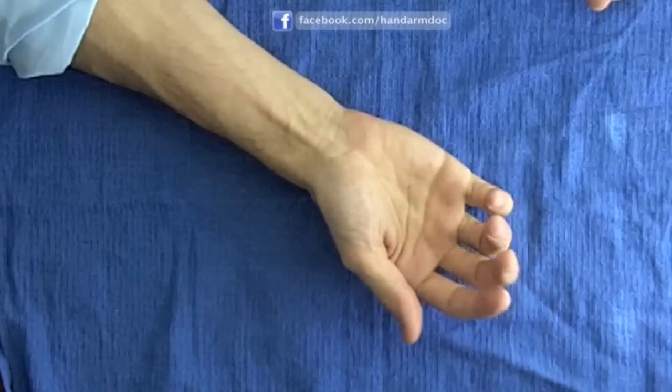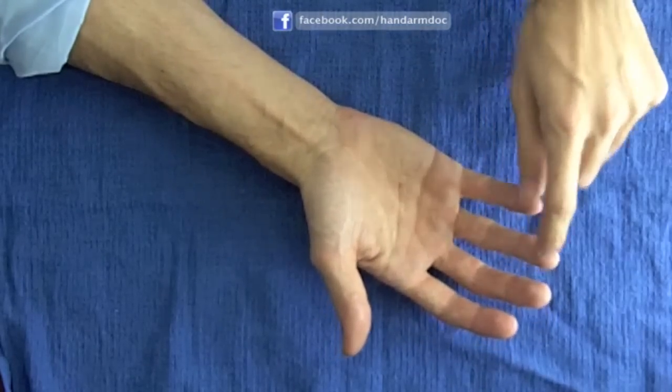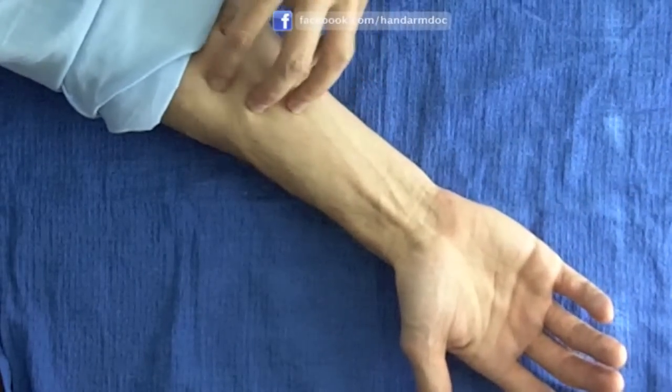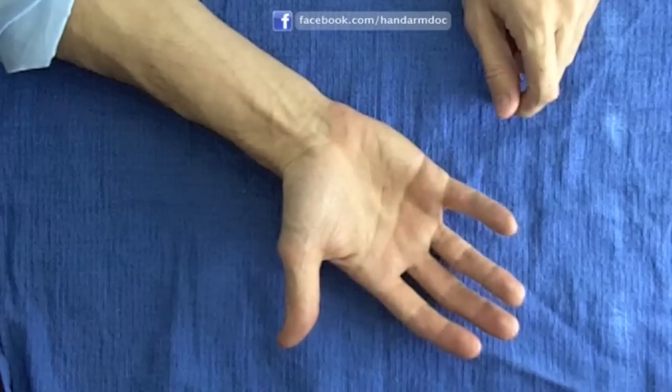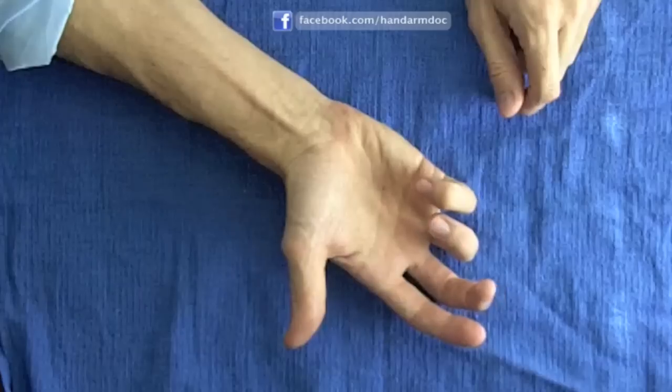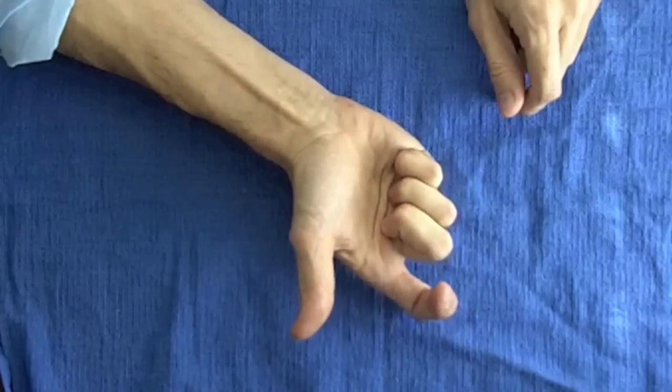The flexor tendons that move the small, ring, and middle fingers usually have a single common muscle where they start from. You can see this if you try to bend these fingers individually without moving the other fingers. Try it on your own hand without touching your other fingers. The adjacent fingers move with the finger you're trying to flex because they're connected higher up in the forearm by muscle.